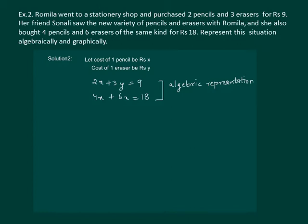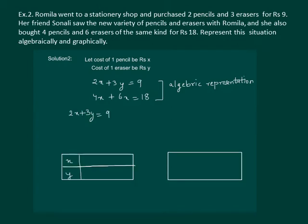Now let us obtain the geometrical representation. Firstly we will construct two tables. We start with the first equation. Let us solve this further. We get 3y equal to 9 minus 2x. Y equal to 9 minus 2x by 3.